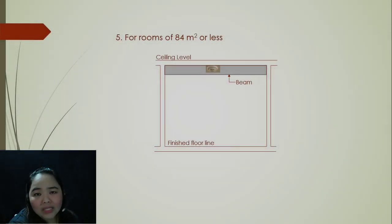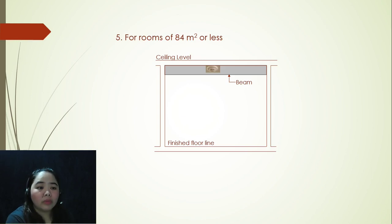Now, with our last argument, argument number 5. For rooms with an area of 84 meters or less, and there is still a beam inside, you can put the smoke detector still underside of ceiling or you can put it at the bottom of the beam.